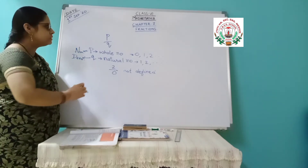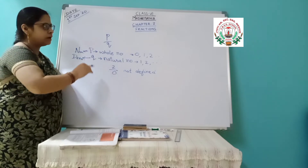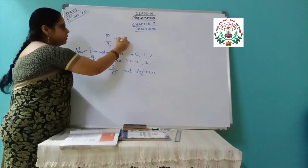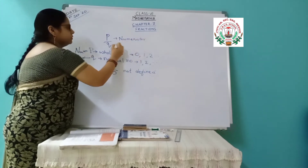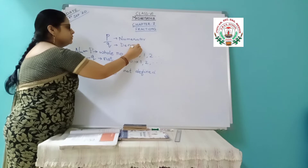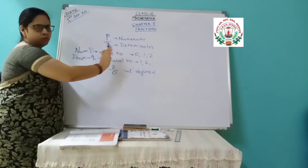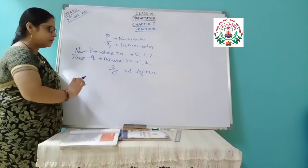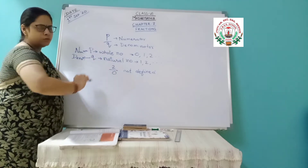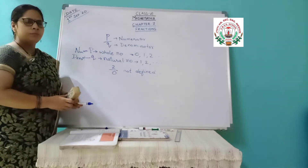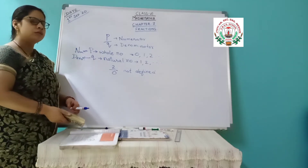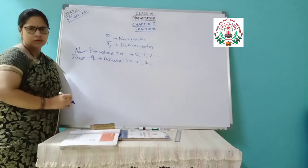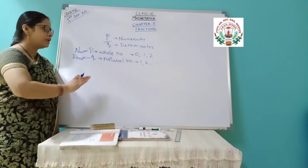You have already studied numerator and denominator in previous classes. Here again you are repeating it, and this is the basic for further classes. P is the numerator and Q is the denominator. P can be any whole number starting from 0, Q only the natural number — 0 cannot come there, because any number divided by 0 is not defined. Before this chapter you studied integers — integers means negative numbers are also there. Here only whole numbers and natural numbers are used, meaning any negative number will not come here for fractions.